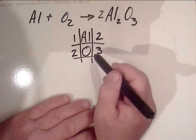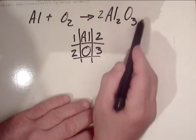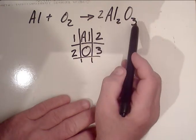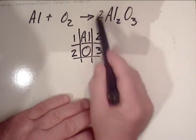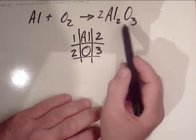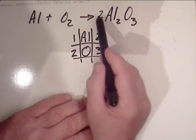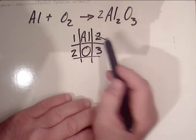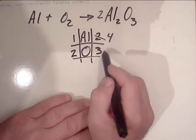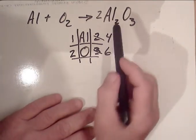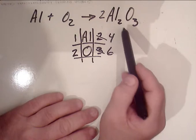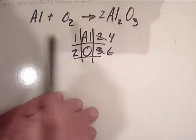Then we figure out how many total pieces of each element are on the product side. Two times two is four. Two times three is six.